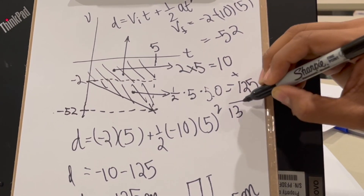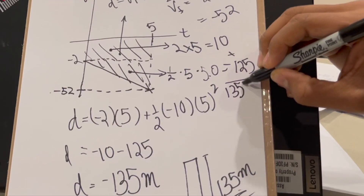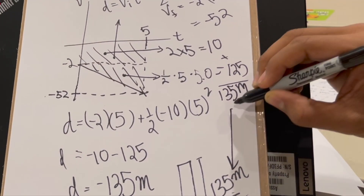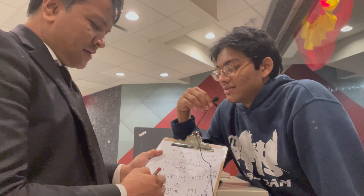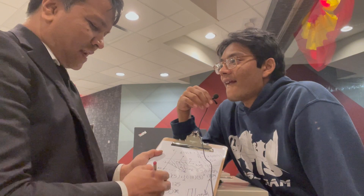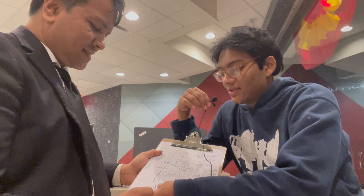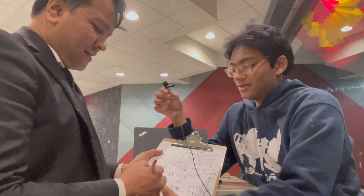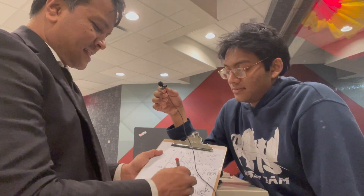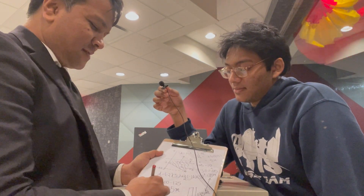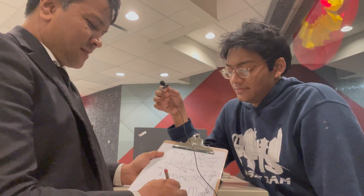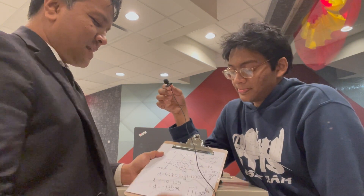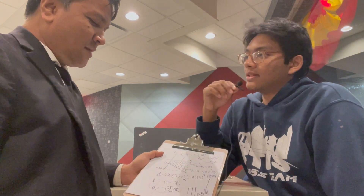If you take the absolute value of the displacement, you get the distance: 135 meters. So the building is 135 meters tall. That's the right answer! Any physics problem — tell us what problem you want us to solve next.